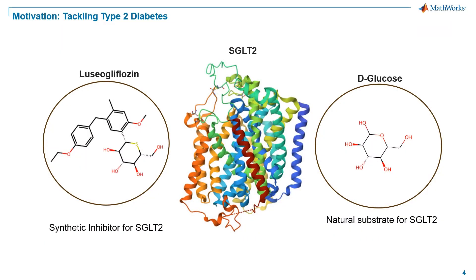The motivation behind this example is how to tackle type 2 diabetes. It is about visual inspection of D-glucose and luciogliflozin, which reveals similarities and distinct structural differences that are key to their interaction with the sodium glucose co-transporter 2, the SGLT2 protein that you see at the middle. D-glucose is a natural substrate for SGLT2.